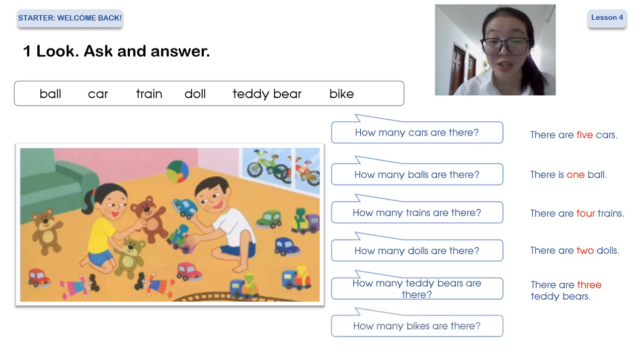And the next question, how many bikes are there? Bike, bike, bike, bikes. I see a green one and a red one already. There are two bikes.